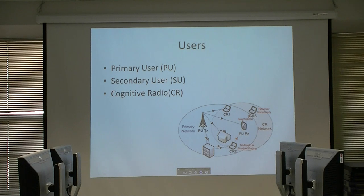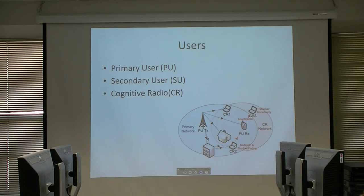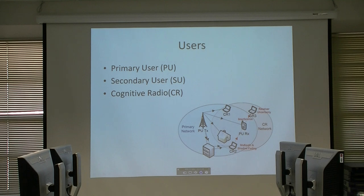For example, CR1, CR2, and CR3 — these three try to communicate together. This primary user is in the middle of their communication path. For CR2, we have something we call shadowing — this user is behind a building and cannot sense the existence of this primary user. I will describe more about these issues further.